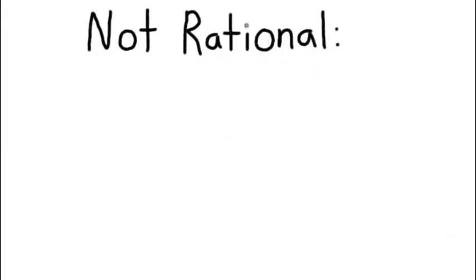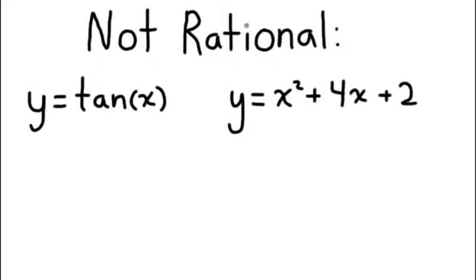Here are a few examples of functions that aren't rational. Trigonometric functions like y equals tan x, trinomial functions like x squared plus 4x plus 2, and don't be fooled by y equals x over 5. You may think it's rational at first because it's a fraction, but this equation is really a linear function because the degree of the denominator is zero.